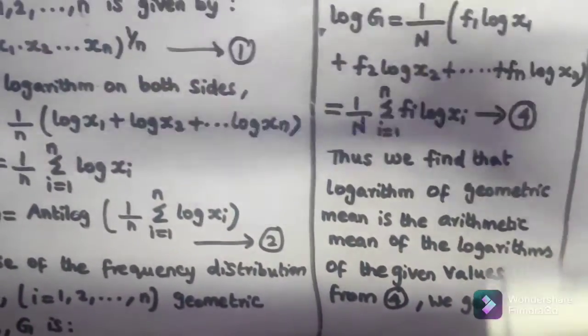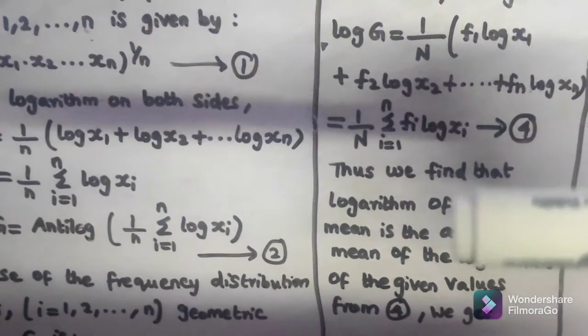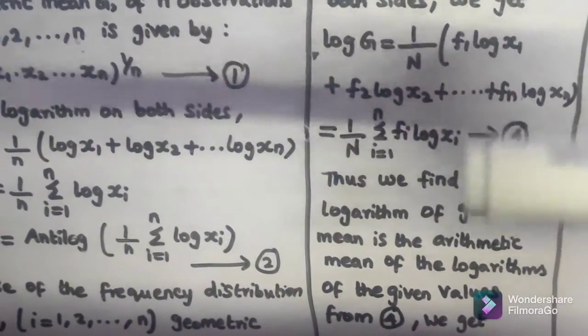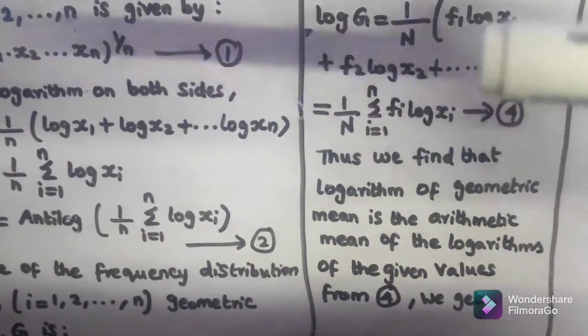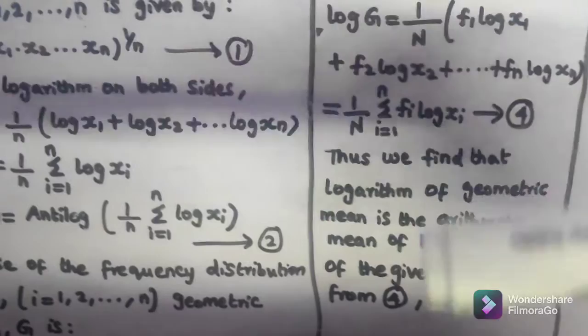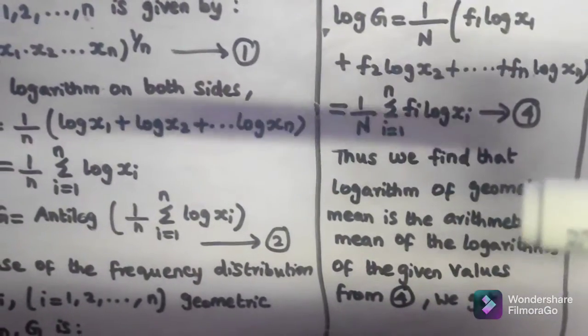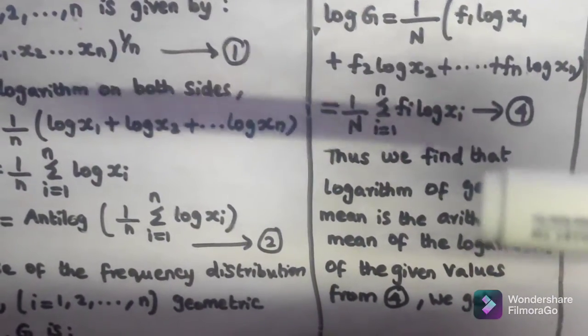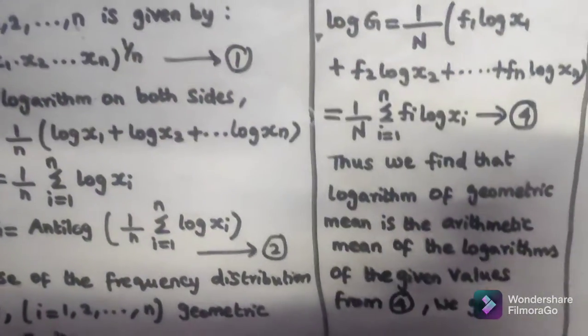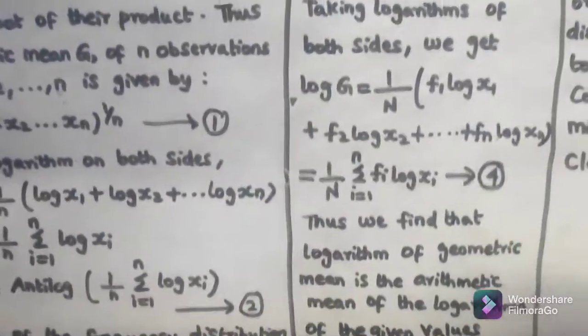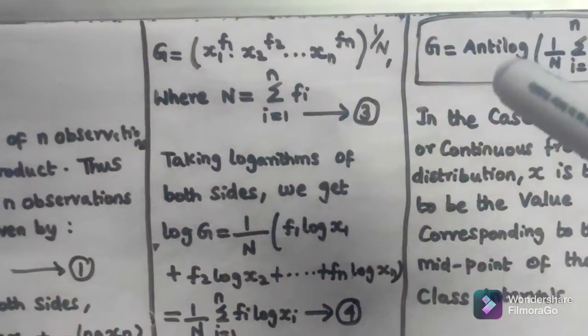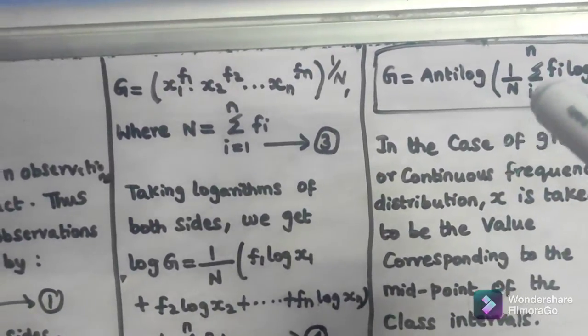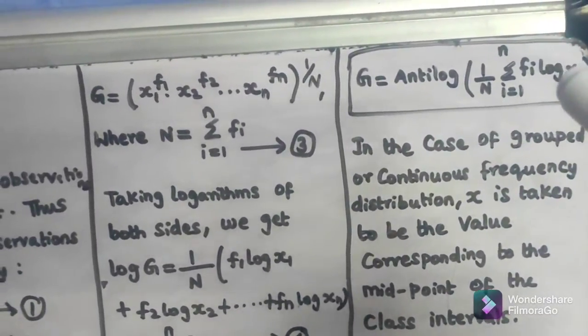This is equation 4. Thus we find that the logarithm of geometric mean is the arithmetic mean of the logarithm of the given values. From equation 4, G = antilog((1/N) Σ(i=1 to n) fi log xi).